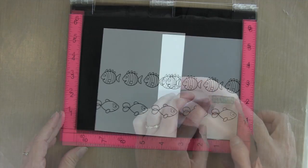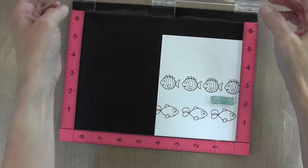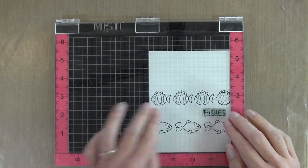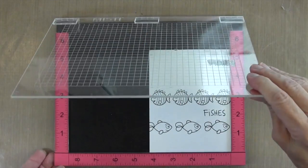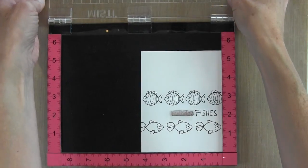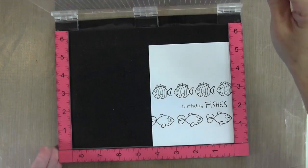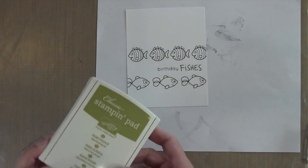You can use this technique for any kind of image that you just want to get a straight line to create a pattern. For the sentiment, it's just going to be quick and easy using the MISTI. I'm going to use the same ink just to make things simple. I like to do mine individually. I could have stamped these two words together, but I want as much visibility as I can to make sure that they're lined up.